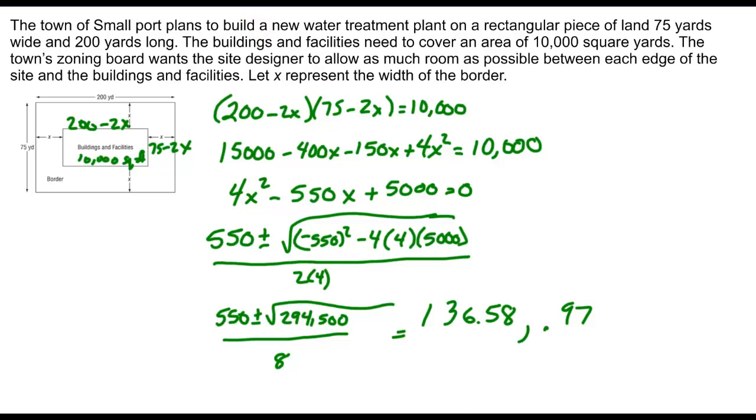And then I look at these two answers and say, well, one of these makes no sense. And that answer is the 136 because if I have 136 on both sides, I'm over 200. Clearly, I can't have 136 on this side because it's only 75 long. So my border is 0.97, which isn't a whole lot.